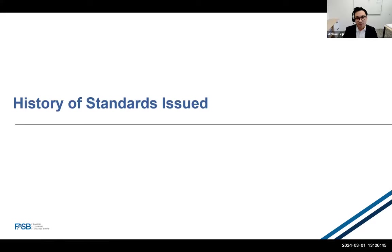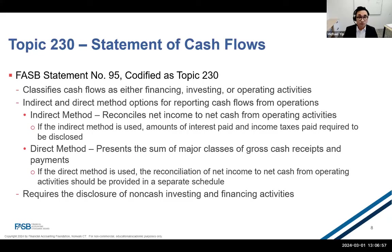Good morning, everyone. In the next part, I'll cover the present guidance on cash flow before getting into the history of cash flows, recent ASUs, and industry-specific standards. You can find guidance related to the statement of cash flows in Topic 230 of the codification, which applies to businesses and not-for-profit entities. It describes three different classifications of cash flows, methods for reporting cash flow statements, and the disclosure of non-cash investing and financing activities. Under this guidance, entities are required to classify cash flows in three different categories: financing, investing, and operating activities.